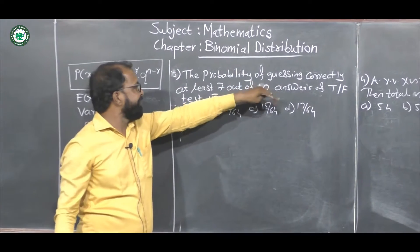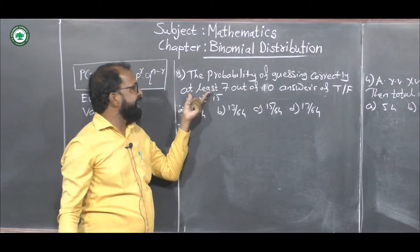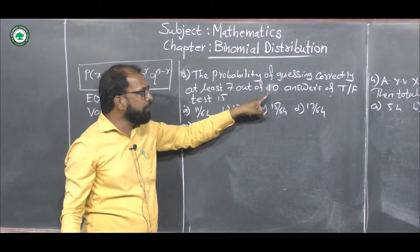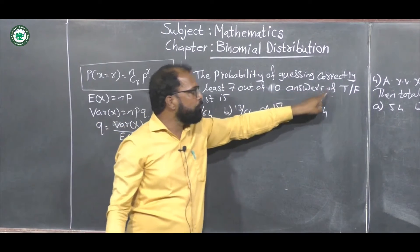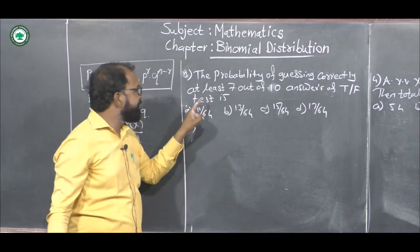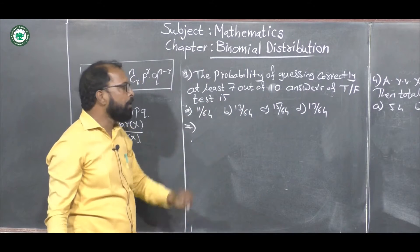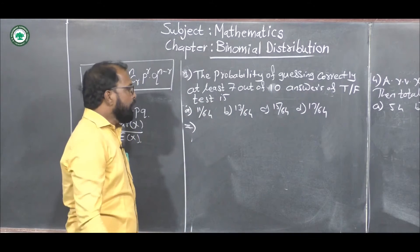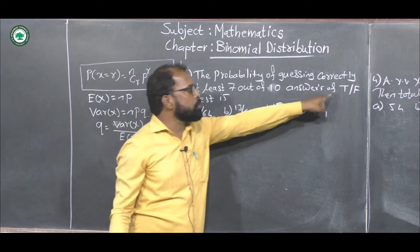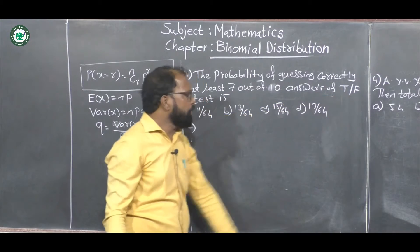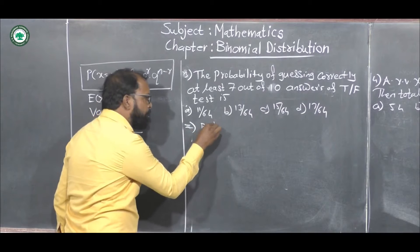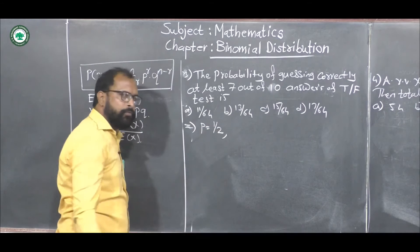See the next example. The probability of getting correctly at least 7 out of 10 answers of a true/false type test is to be found. For any question there are two options, so the probability of getting the correct option, that is the probability of success, becomes 1/2.